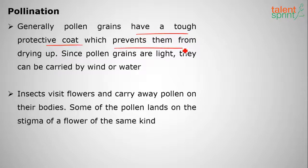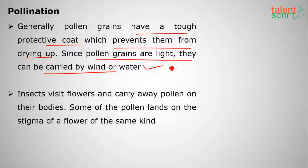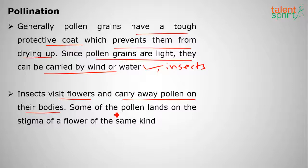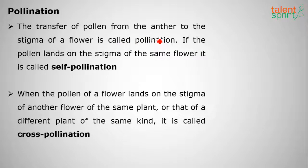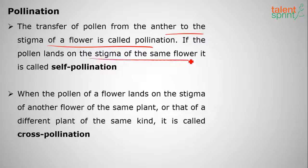Moving on to pollination: pollen grains have a tough protective coat which prevents them from drying up. Since pollen grains are light, they can be carried from one place to another by wind, water, or insects. Insects visit flowers as pollinating agents and carry pollen on their bodies. When pollen lands on the stigma of the same flower, it is called self-pollination.